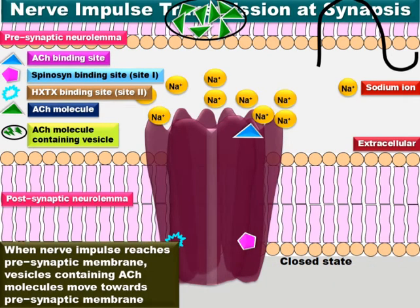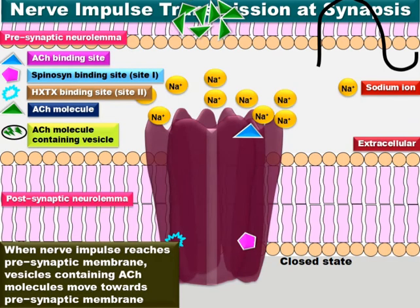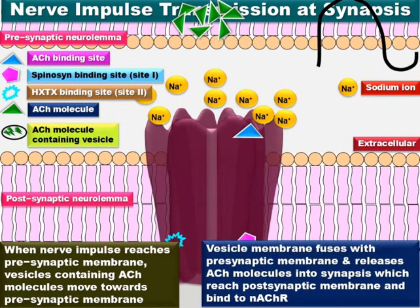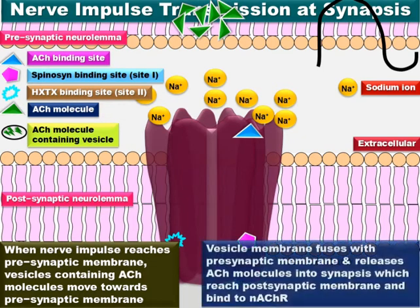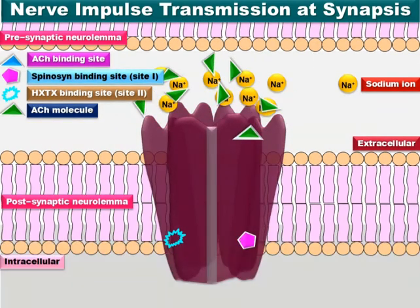When the nerve impulse reaches the presynaptic membrane, the vesicles containing the acetylcholine molecules move forward and reach the presynaptic membrane, and the acetylcholine molecules are released into the synapse. These acetylcholine molecules travel across the synapse and reach the nicotinic acetylcholine receptor and cation channels located in the postsynaptic membrane, binding to the acetylcholine binding site.